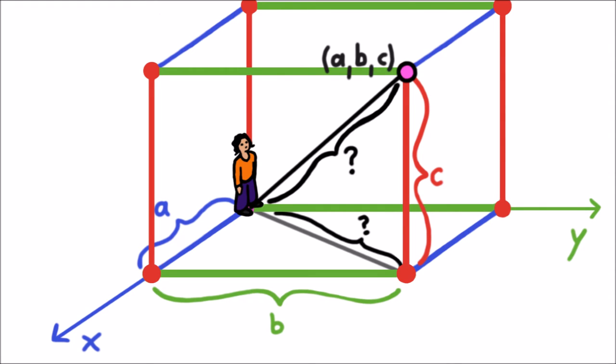The shadow is the hypotenuse of a right triangle, with side lengths A and B. So that hypotenuse must have length the square root of A squared plus B squared. So we found the length of the shadow. But how does that help us find the length of the rope?